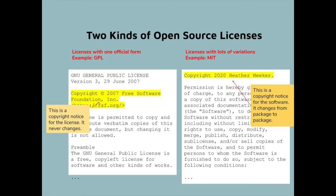The most important thing to learn about doing license notice files is that there are two kinds of open source licenses — and you probably thought I was going to say permissive and copyleft, but that's not what I'm talking about here. There are licenses that have one canonical form, such as GPL. GPL version 3 only has one form and it never changes. The other kind is a template license, such as BSD or MIT, where the copyright notice for the software is baked into the top of the license.